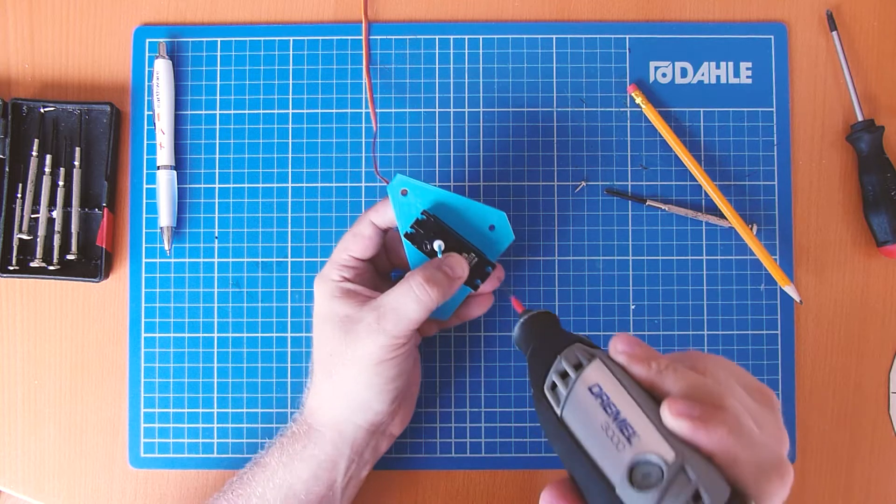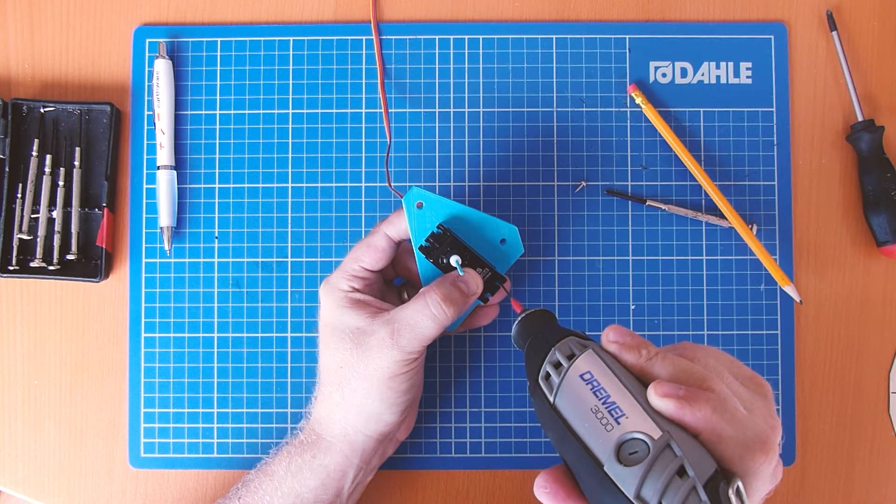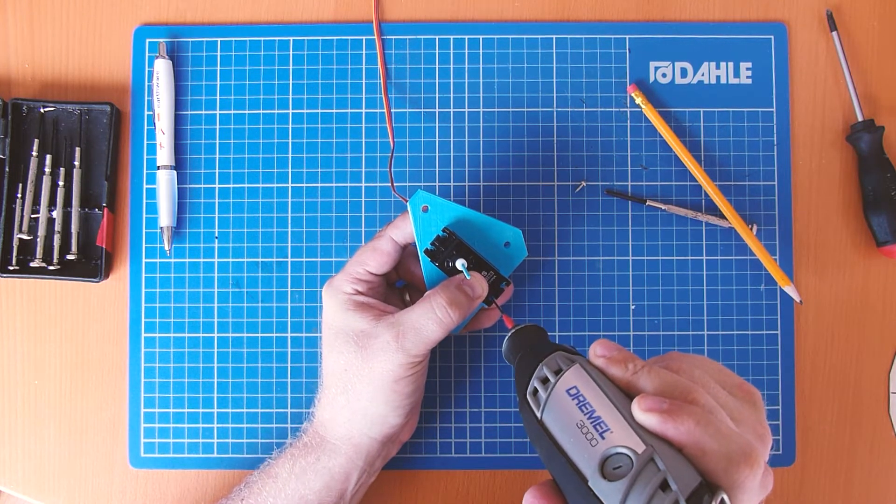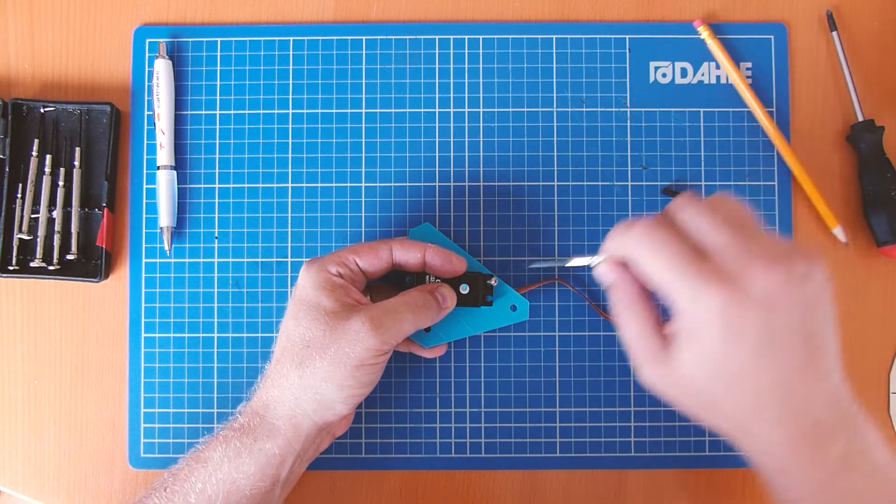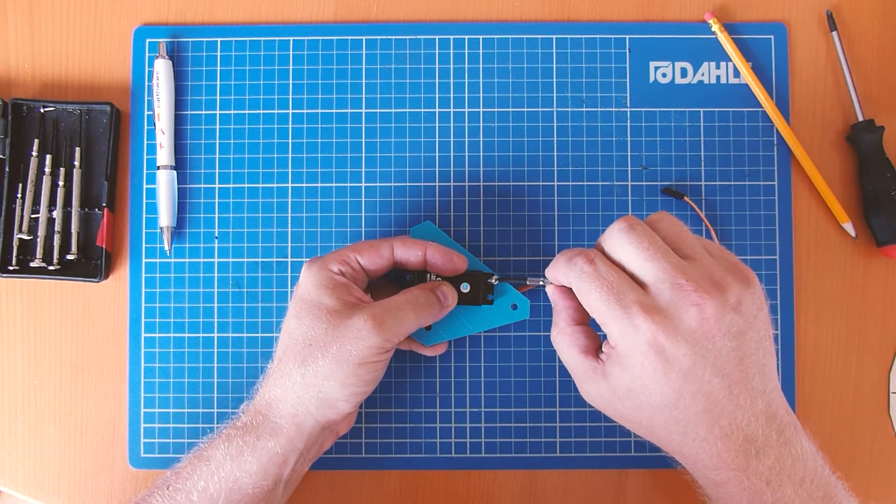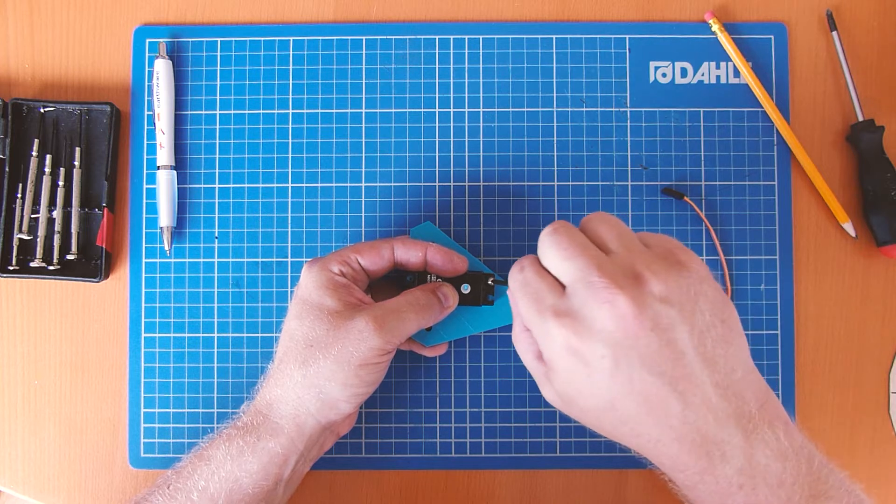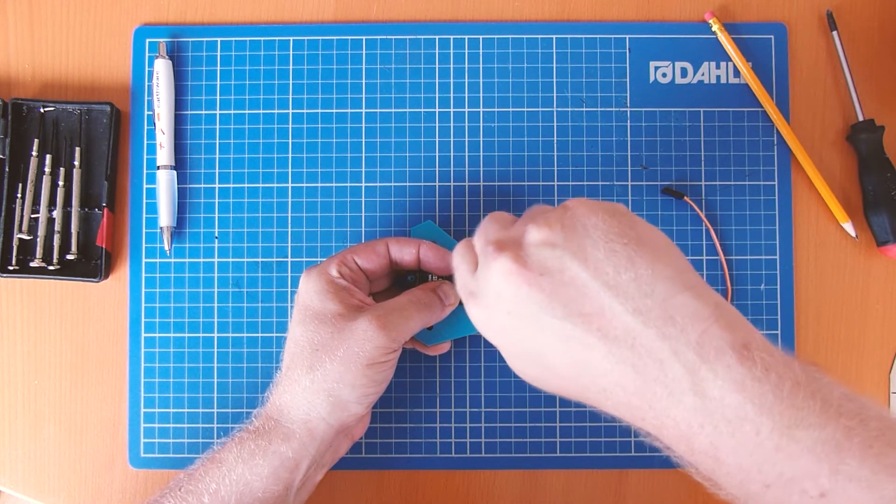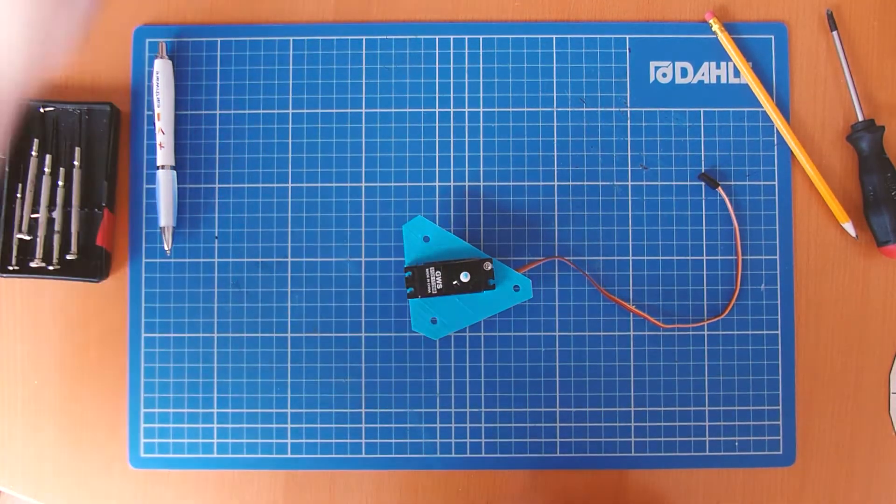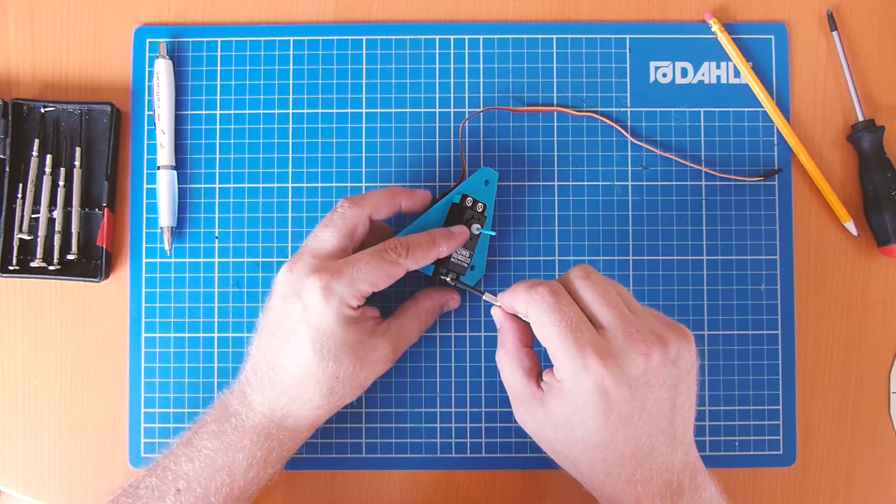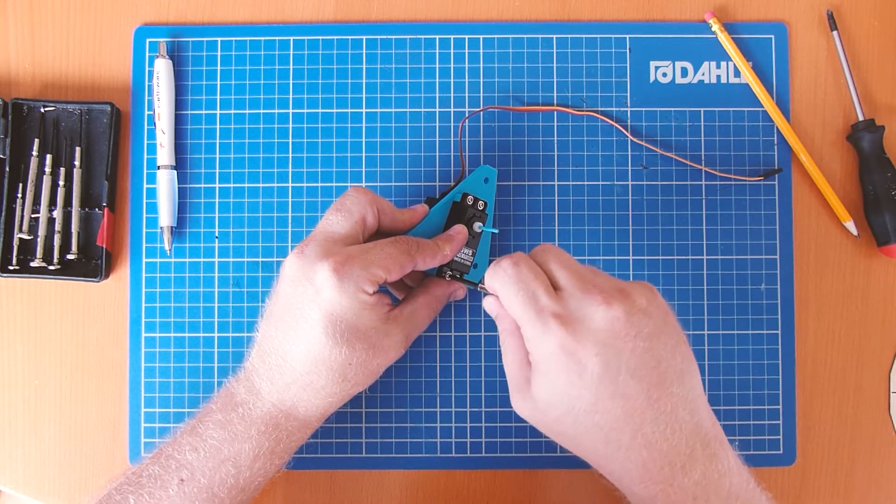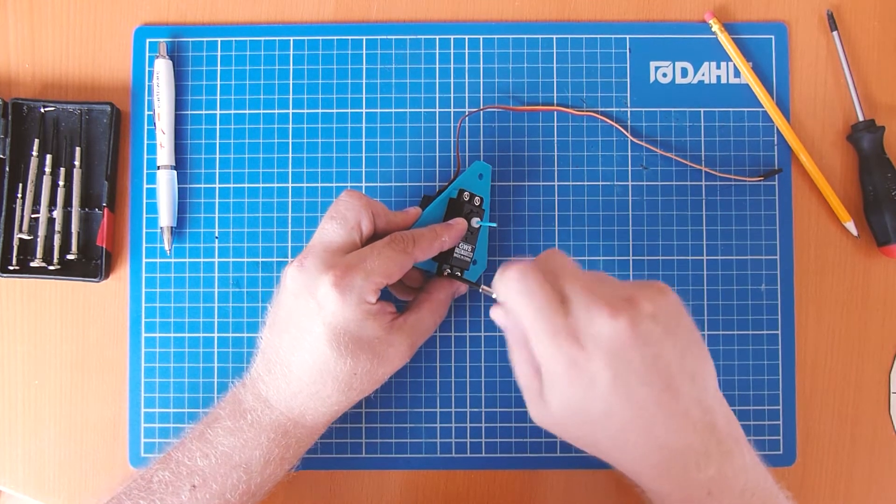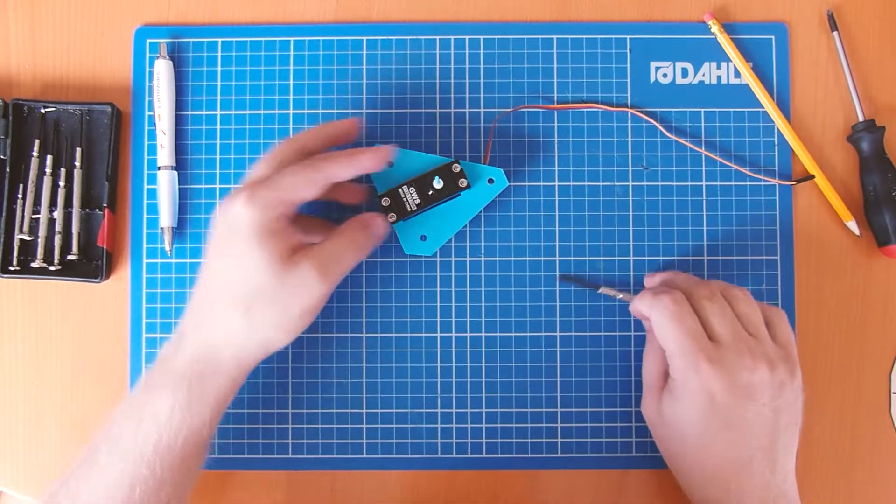So we started off by putting the servo into the servo mount that we 3D printed, then using the Dremel to drill some little holes ready for the screws to go in. Then we screwed these screws, these are the original servo horn screws that you get with the servo, screwed them in and it ended up quite nicely tightly fitting even with the 3D print not having holes ready for it. Screwed in all four and you can see the original servo shaft here that we 3D printed the blue bit coming out in the middle of the servo that you'll see later.